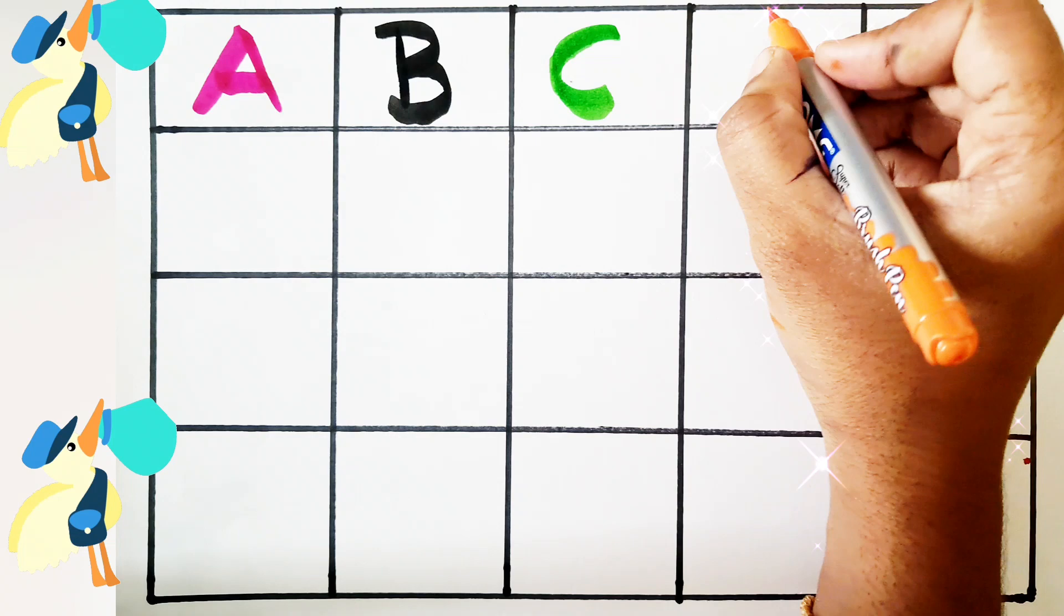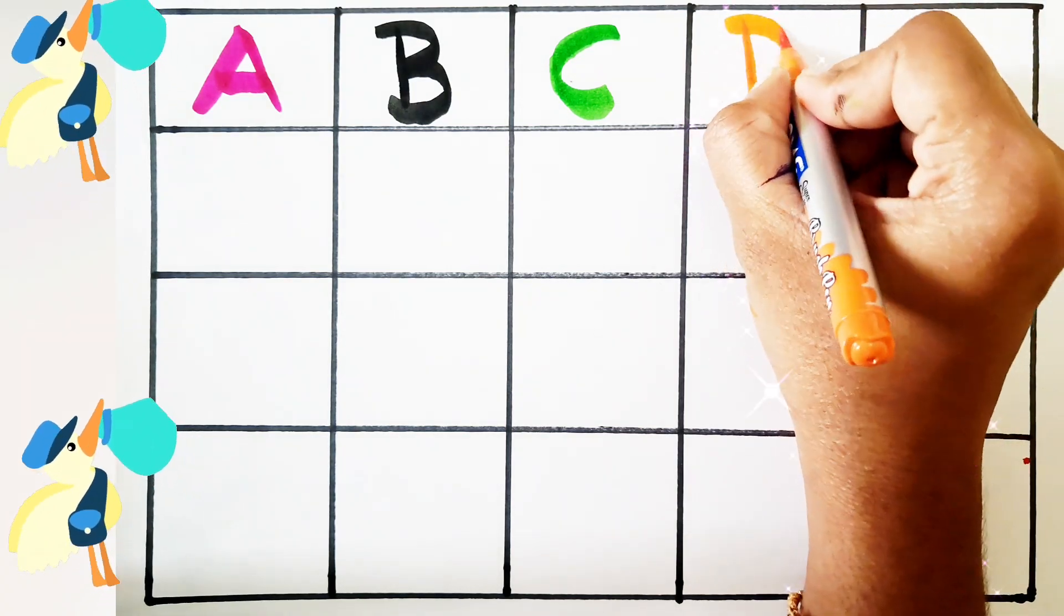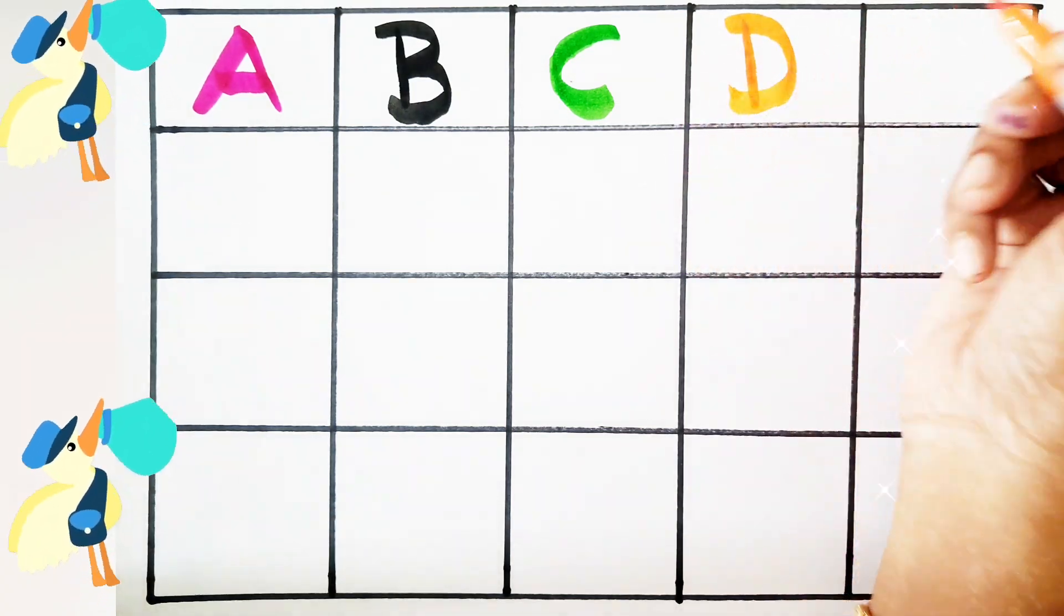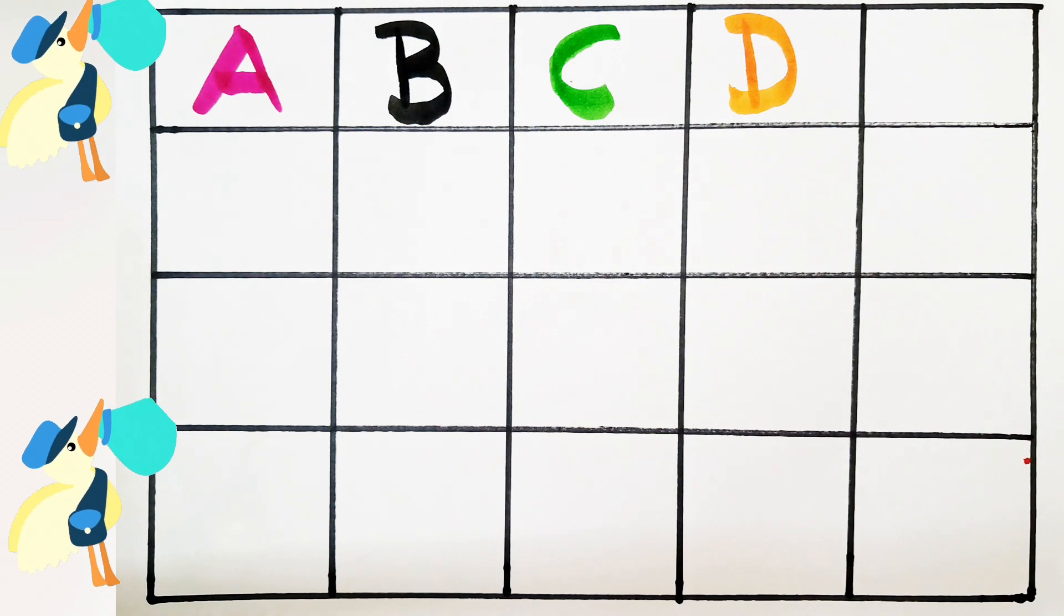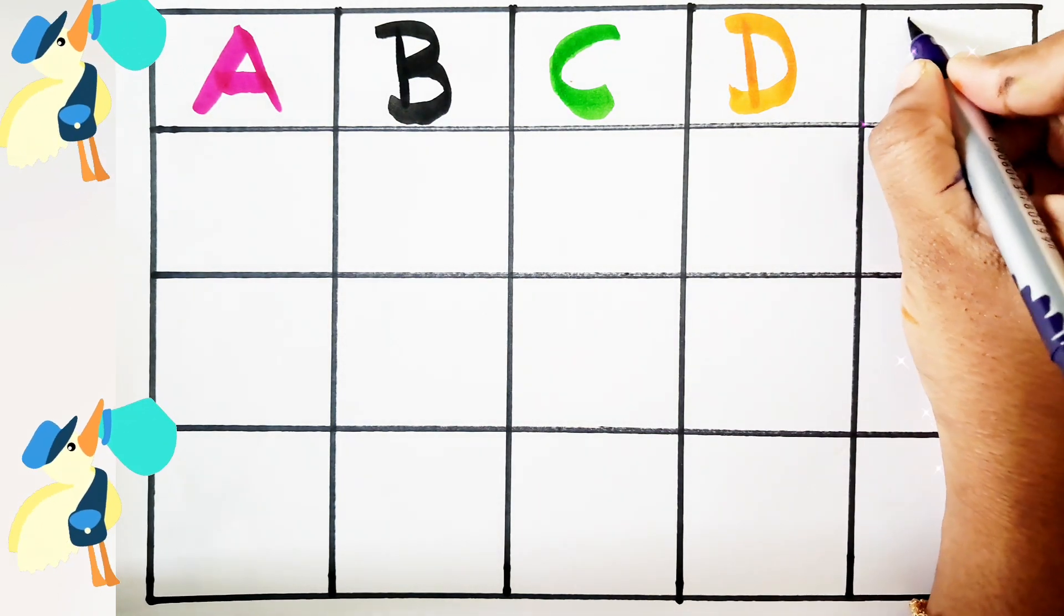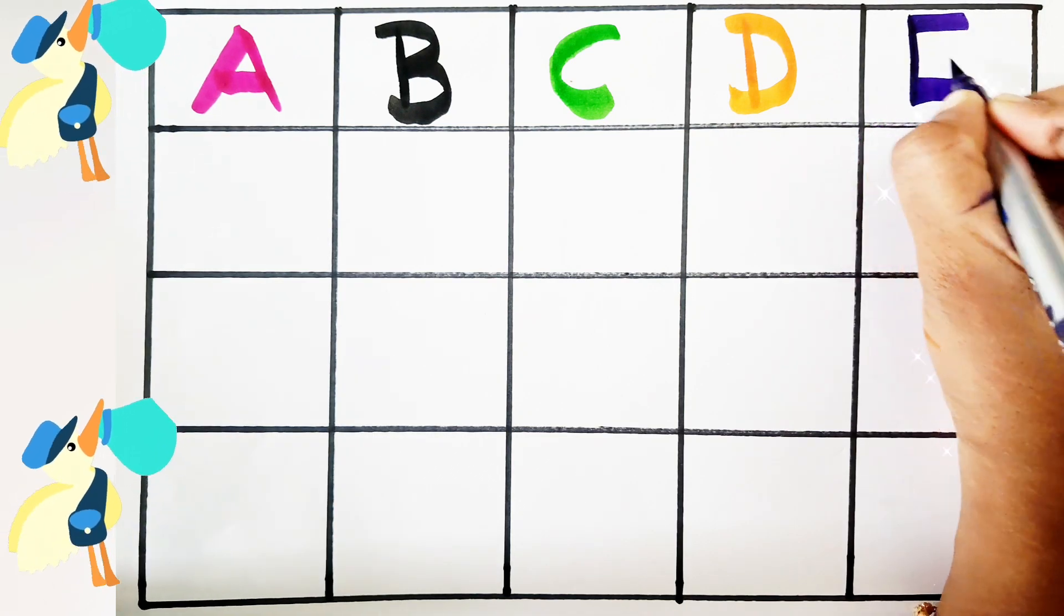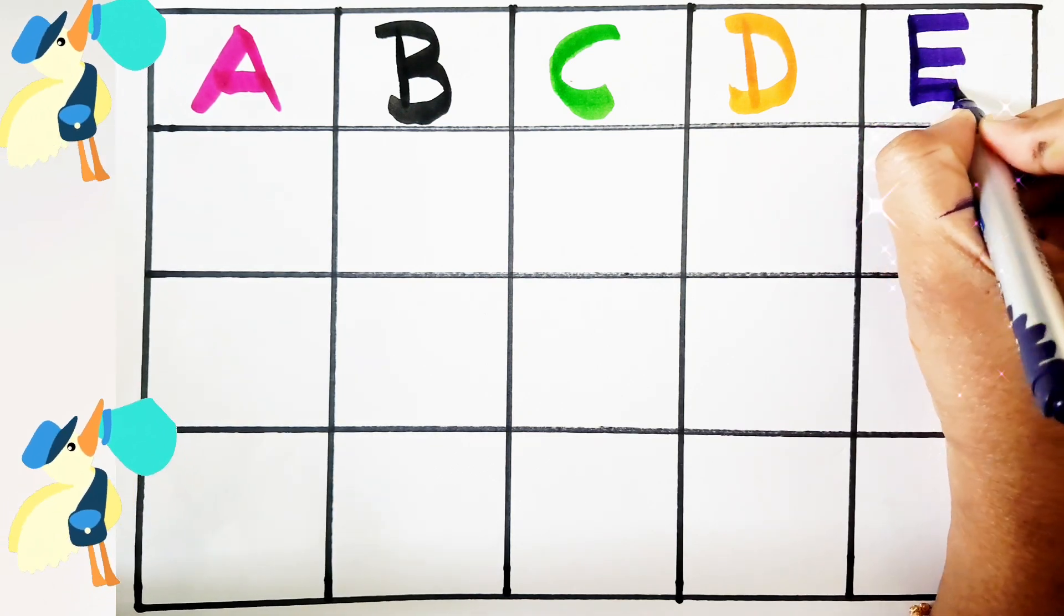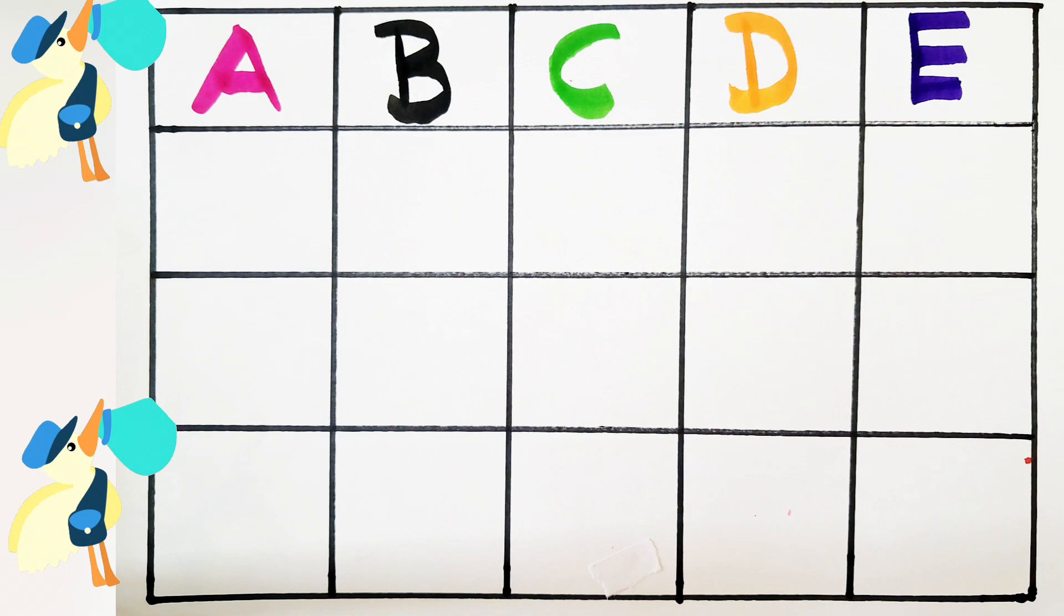Next letter: D - D for dog and D for donkey. Next letter: E - E for egg and E for eagle.